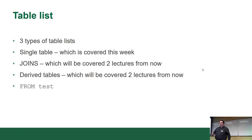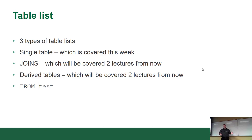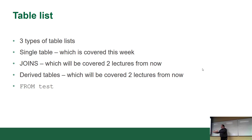For the table list there are three types: a single table, which is what we're talking about this week; joins, which will be covered in the next lecture; and derived tables, also covered two lectures from now. The basic syntax example would be FROM test. So far we've seen SELECT star FROM test, exactly what I did in class last week.